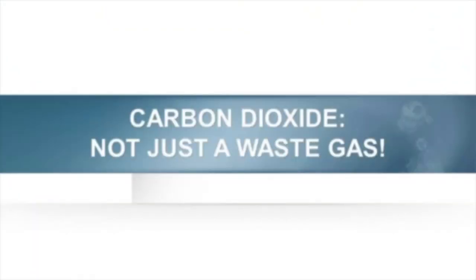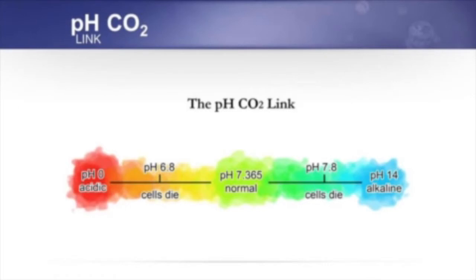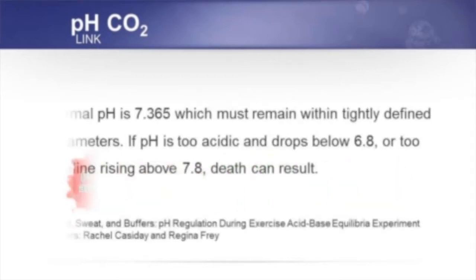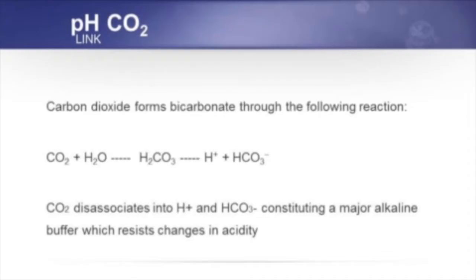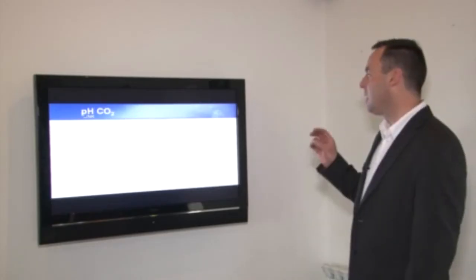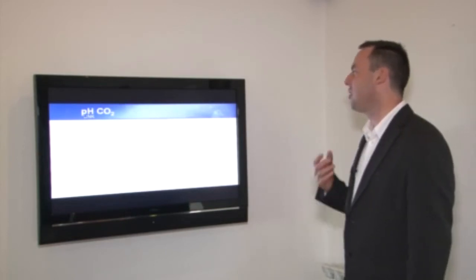When we breathe too much we offload carbon dioxide, and carbon dioxide is not just a waste gas. One of its functions is to play a role in pH. Normal pH of the blood is 7.365. If pH drops below 6.8 or rises above 7.8, cells die. Carbon dioxide maintains pH within very tightly defined parameters. In the blood, carbon dioxide forms bicarbonate: CO2 and water dissociate into carbonic acid, which in turn dissociates into hydrogen ion and bicarbonate (HCO3-), constituting a major alkaline buffer that resists changes in acidity.